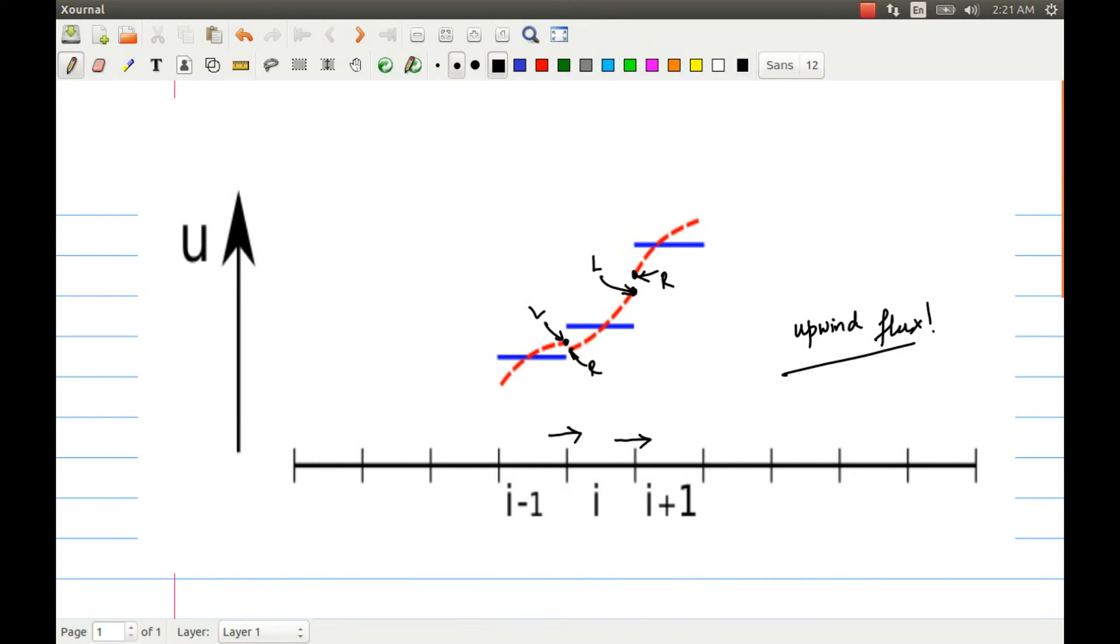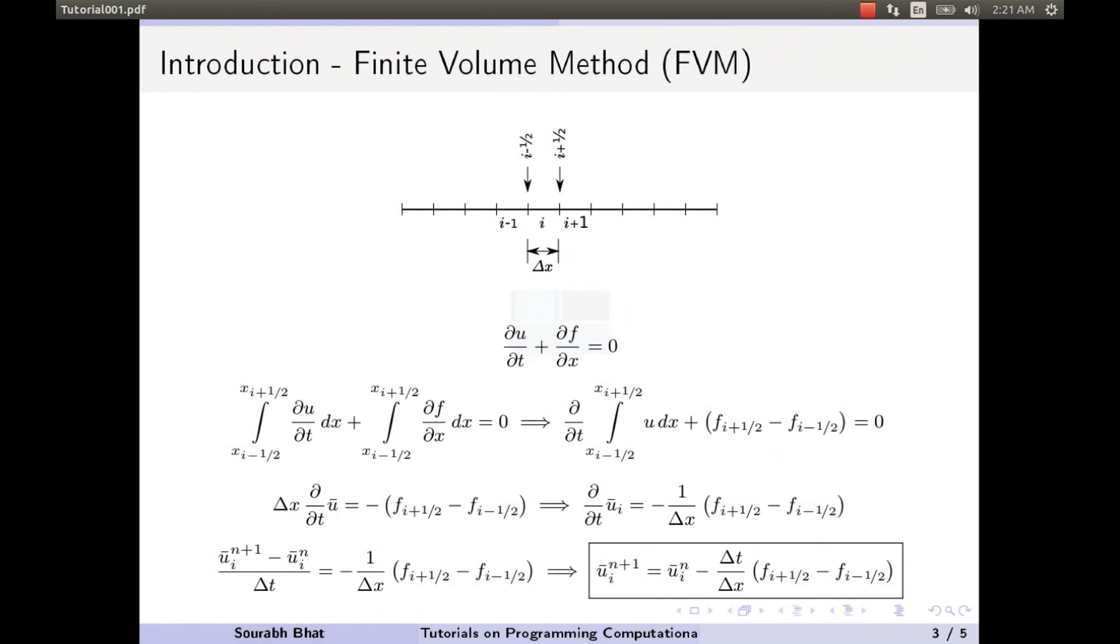We can continue and substitute that into this flux here, i plus half and i minus half. If you remember, you will get the values at i plus half and i minus half. So we'll get the flux here and here based on these values. And those we can then substitute for this F i plus half and F i minus half, and then calculate the average value at u n plus one. That's the whole idea that we are going to use for solving this scalar advection equation.